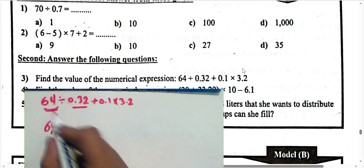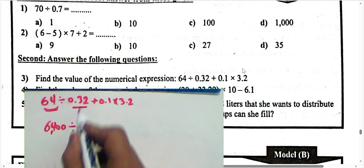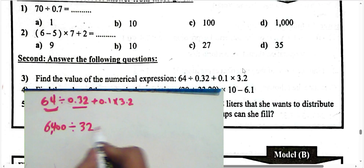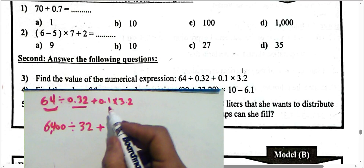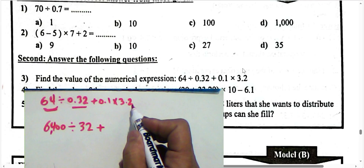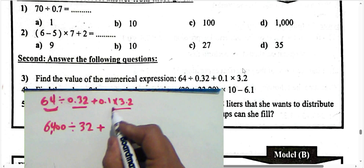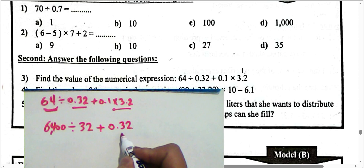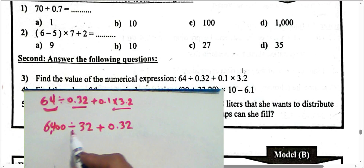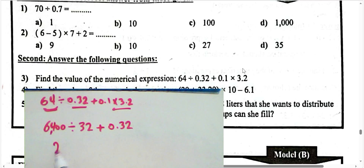64 times 100 equals 6400, and 0.32 times 100 equals 32. For the second part, (1/10) times 3.2 means 3.2 divided by 10 — move the decimal point one place to the left. The result: 6400 divided by 32. 64 divided by 32 equals 2, giving us the result.